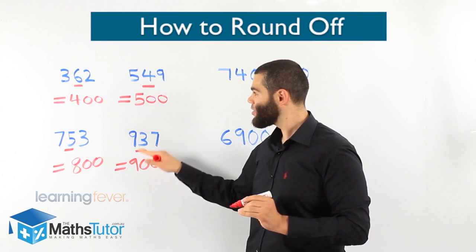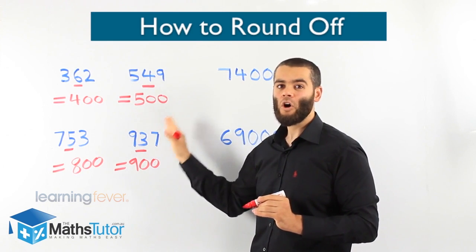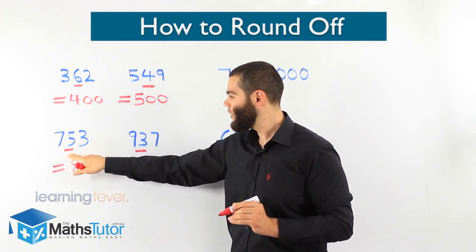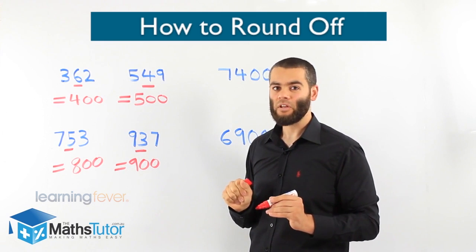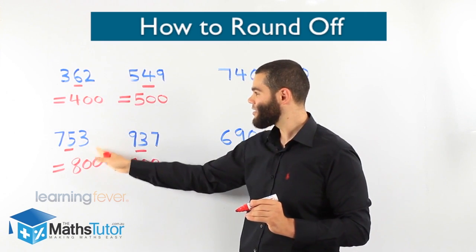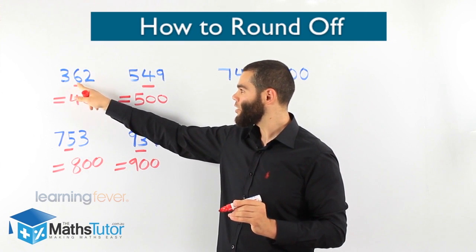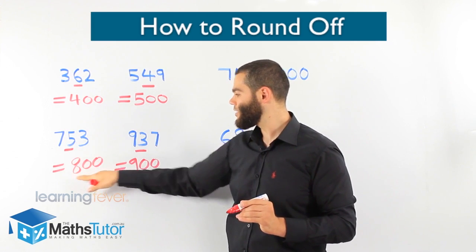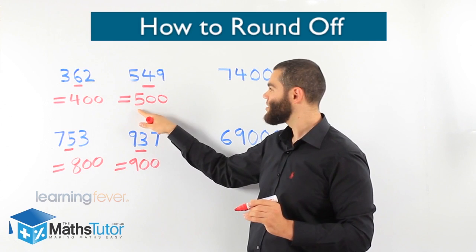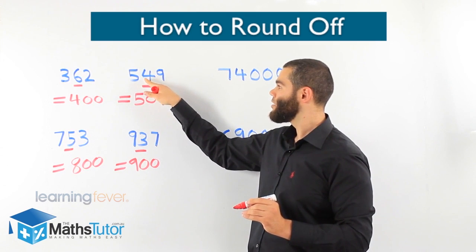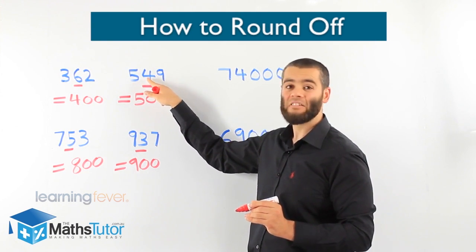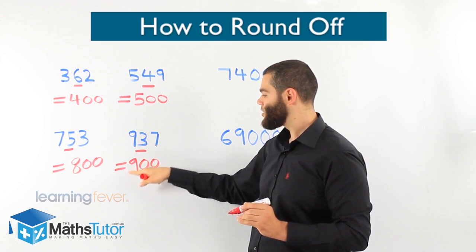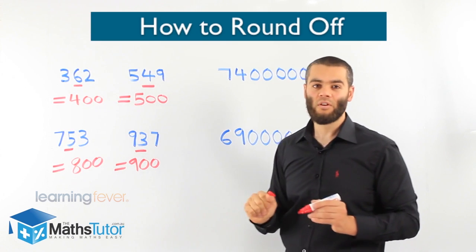As you can see, it's a simple concept. We always look to the number on the right of what we are rounding to — in all four cases we were rounding off to the nearest hundred. In the first two examples, the number on the right was five or more, so they rounded up: seven hundred and fifty-three became eight hundred. In the last two, the number on the right of the hundreds column was less than five, so they rounded down — nine hundred and thirty-seven became nine hundred.